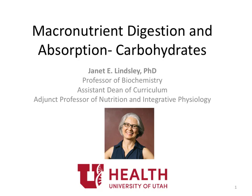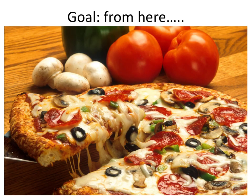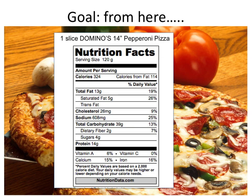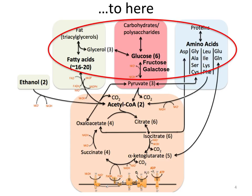Welcome to four short recorded lectures about macronutrient digestion and absorption. This one will be about carbohydrates. The goal is for you to be able to visualize what happens when we eat a meal, such as a pizza, which has a specific nutrient composition, to having these major macronutrients available to the cells of our body.